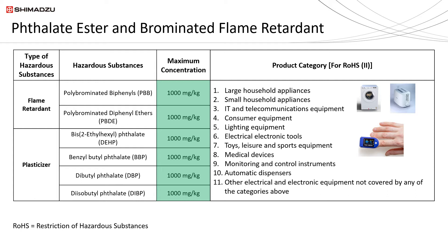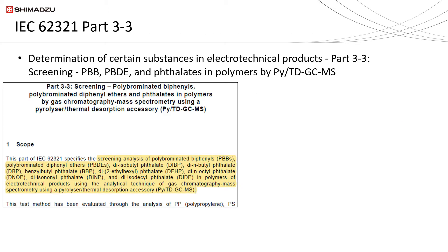Any electrical and electronic equipment falling under these 11 categories that wants to get CE mark must also fulfill RoHS 2 regulation. If you do an online research, you may find suitable methods to detect these substances from literature journals or international standards organizations. For example, the International Electrotechnical Commission (IEC) had developed a method to screen for polybrominated biphenyls, polybrominated diphenyl ethers, and phthalate esters in polymers using gas chromatography mass spectrometry paired with a pyrolyzer thermal desorption accessory. This is found in IEC 62321 Part 33.